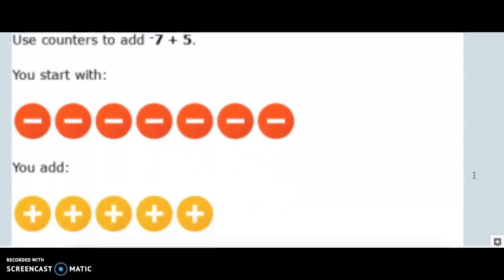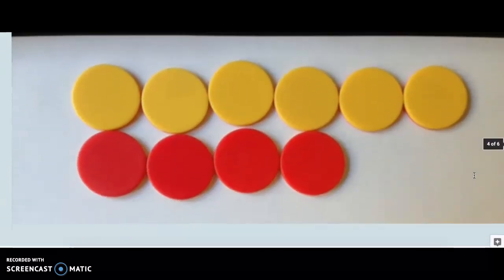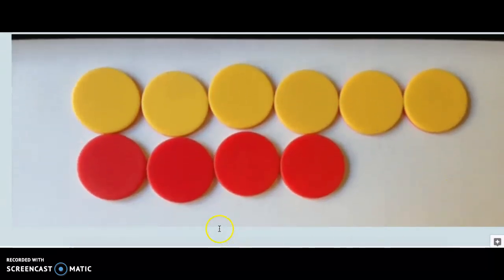Use these counters to add negative 7 plus 5. What is the correct problem and answer represented by these counters?